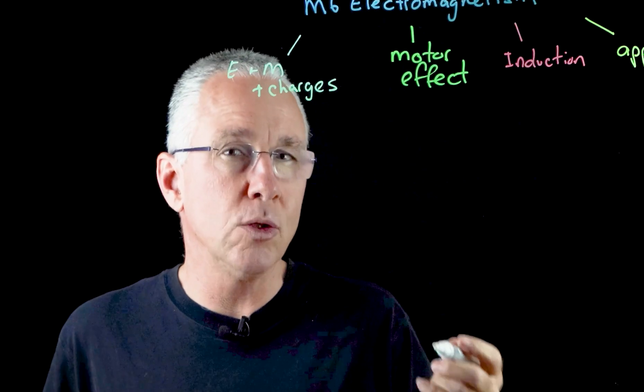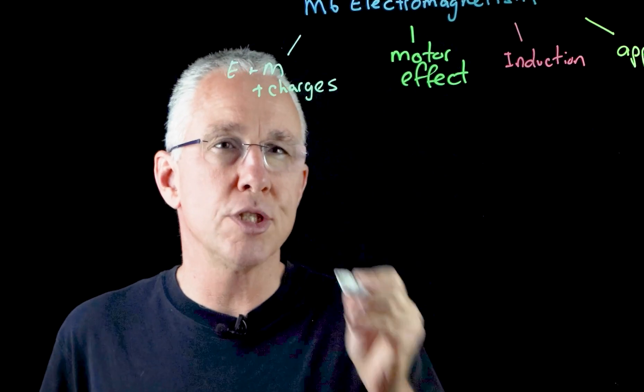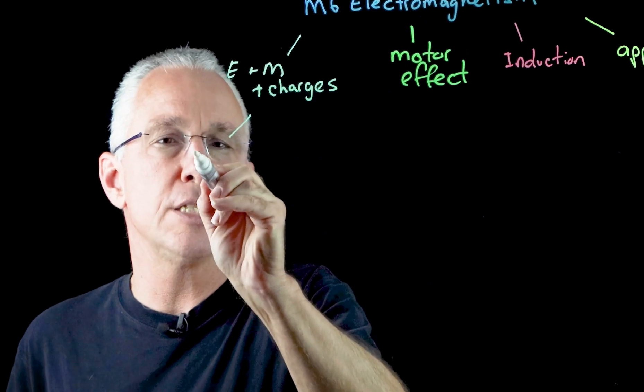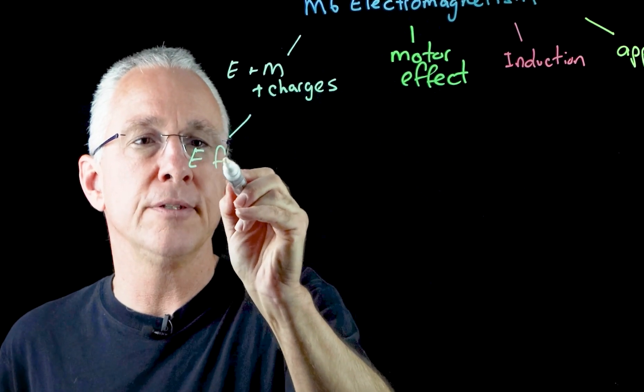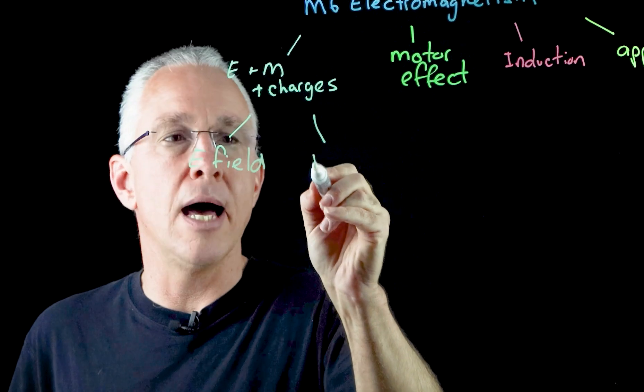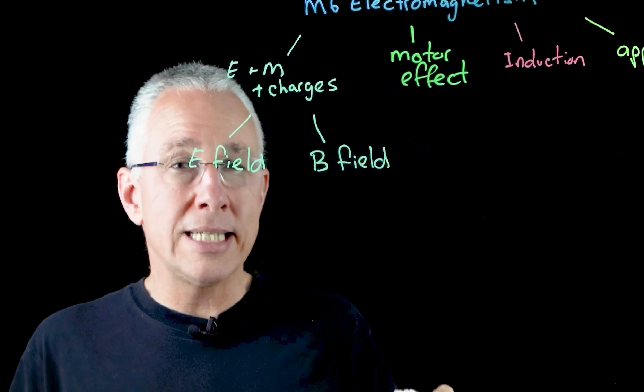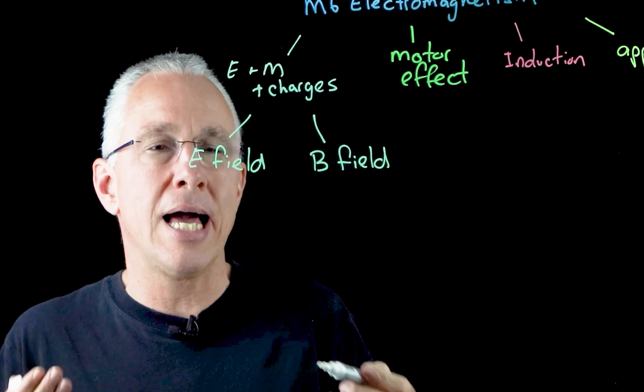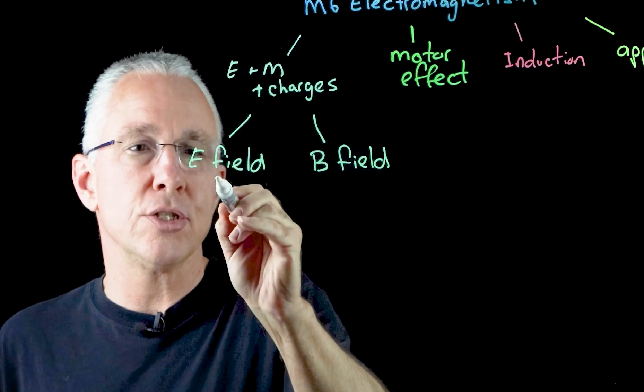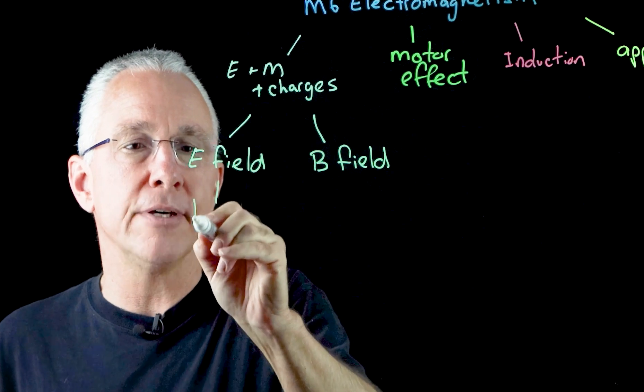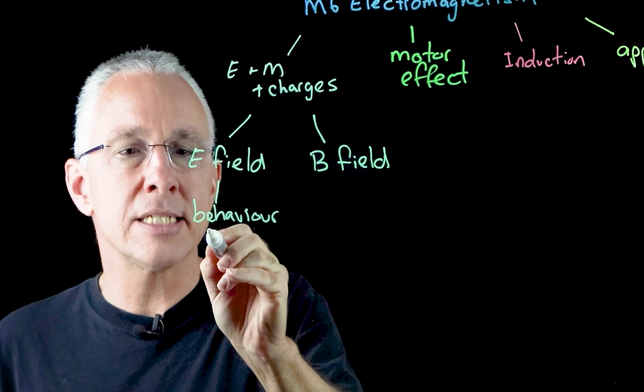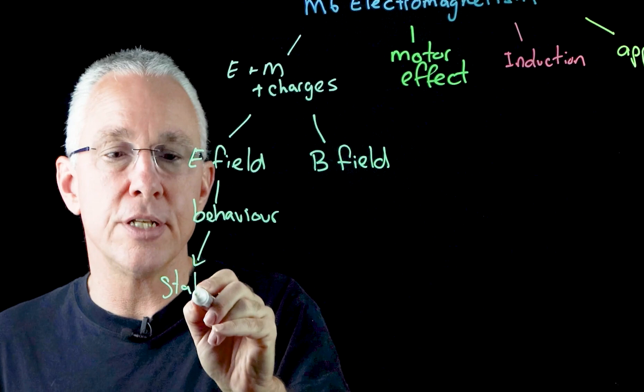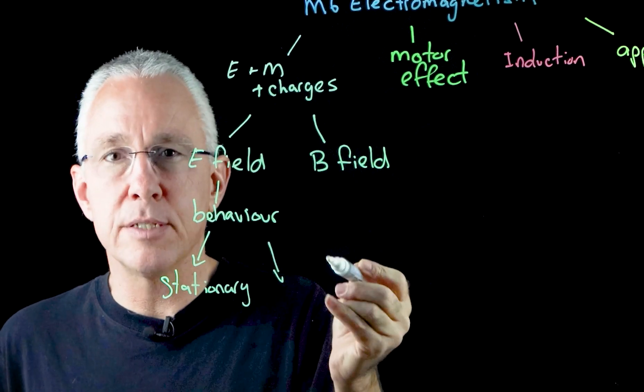Now our first inquiry question really looks at charge behavior in two types of fields. The first is its behavior in an electric field, and then we look at a magnetic field. When we examine its electric field, we are really looking at how does it respond or how does it behave in two situations. So we're interested in its behavior, if it's stationary,